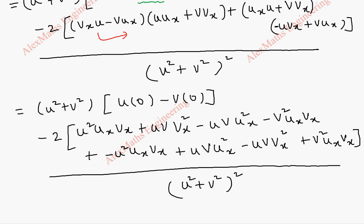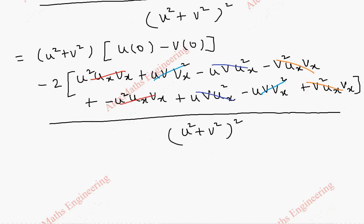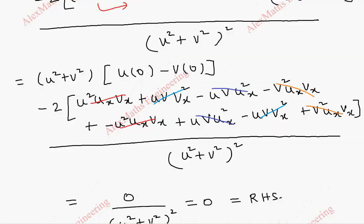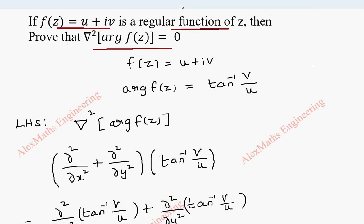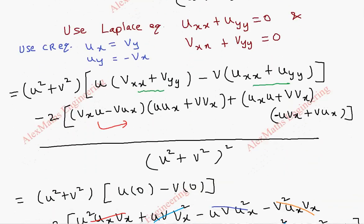Using the Laplace equations, the first bracket becomes zero. Then for the remaining terms, u squared ux vx cancels with minus u squared ux vx, uv vx squared cancels, minus uv ux squared plus uv ux squared cancels, and v squared ux vx with opposite sign cancels. Everything cancels, so the numerator is 0. Therefore, del squared of argument of f equals 0, which proves the LHS equals the RHS.